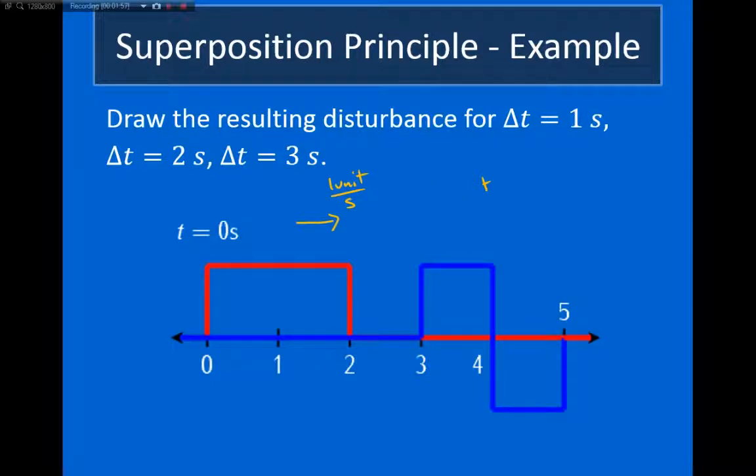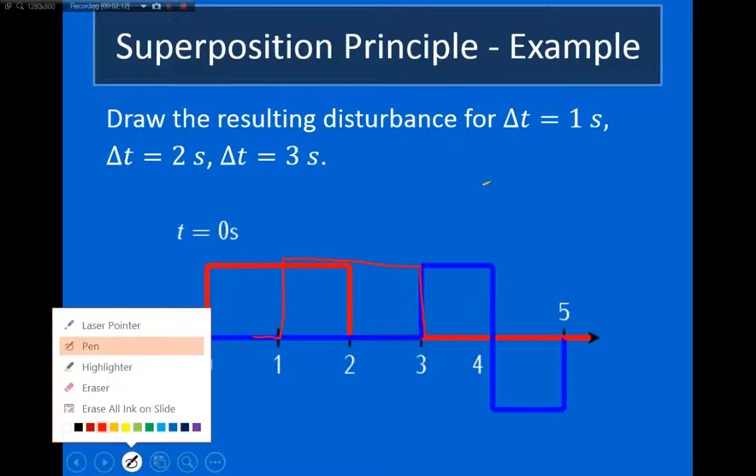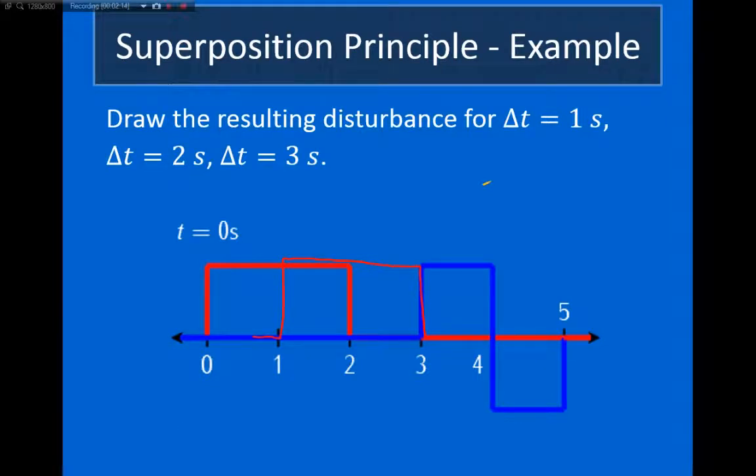Let me go ahead and erase this and switch colors. The red wave, one second later, is going to be over here. And the blue wave, one second later, is going to be over here. So what we can see is that right here in the center we have two waves: the red wave and the blue wave. The superposition principle says we should add those together and get a resulting disturbance that goes all the way up to here.